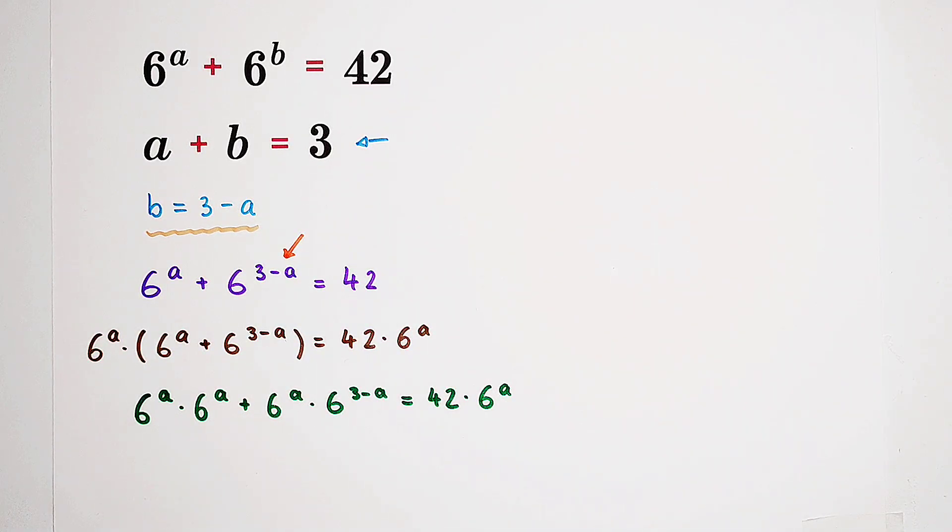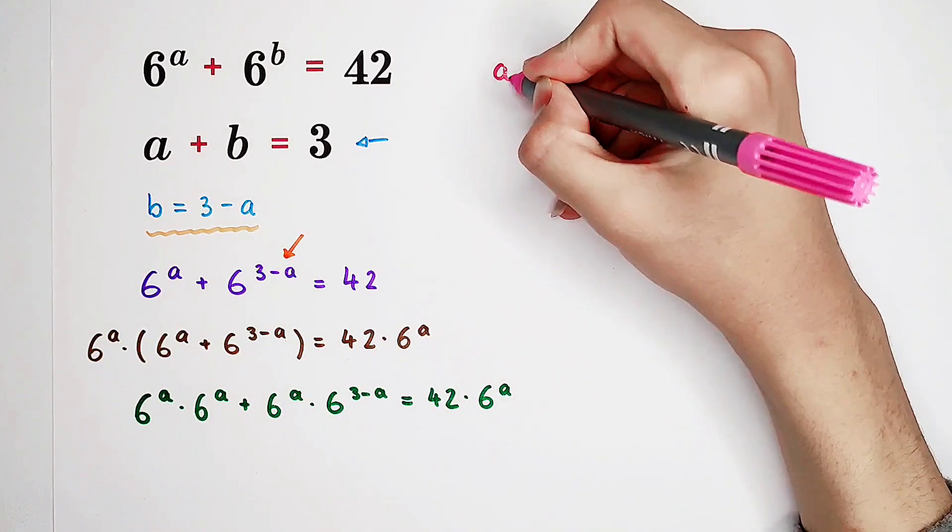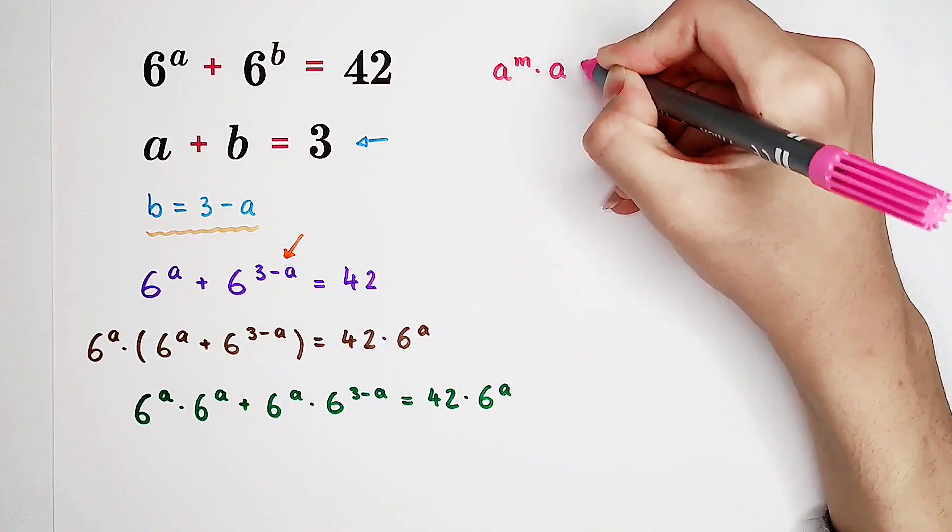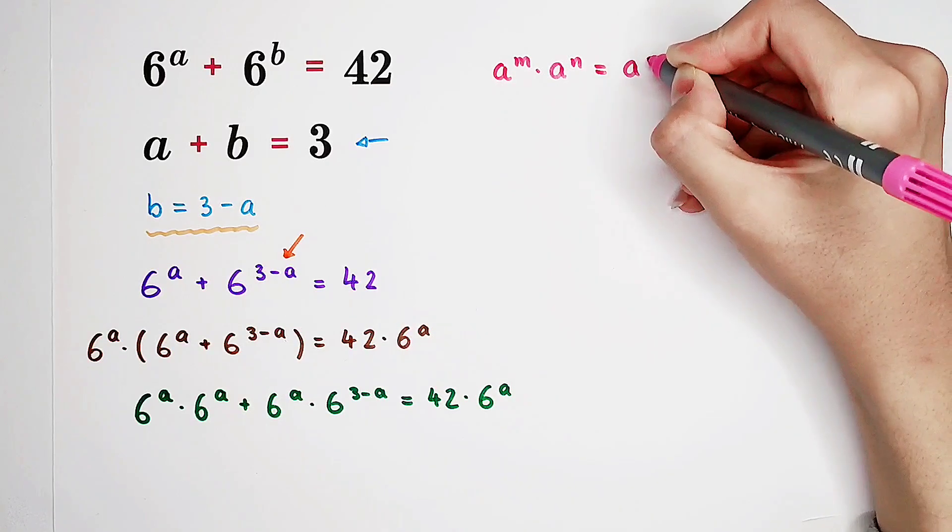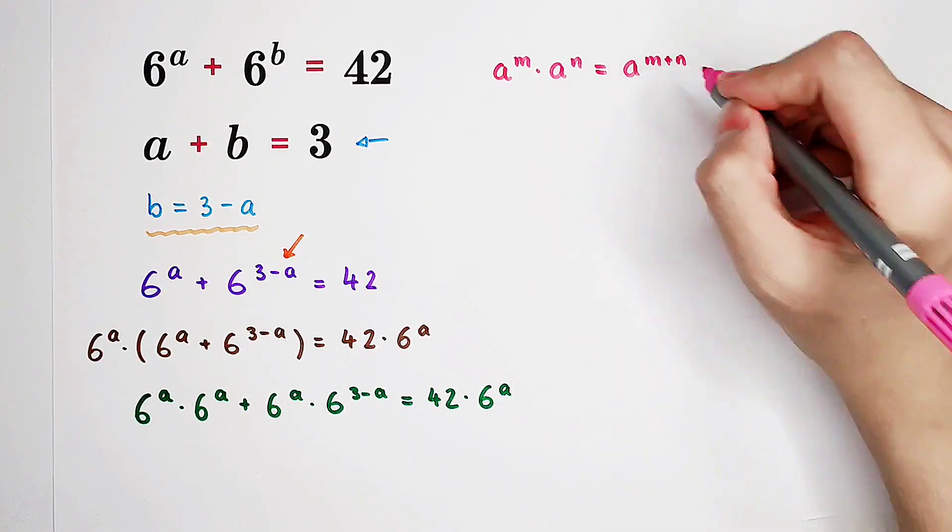So many powers of 6, we always have A to the power of M times A to the power of N equals A to the power of the sum of the exponents. So, this is just 6 to the power of M plus N.